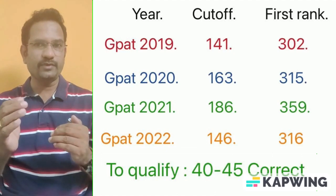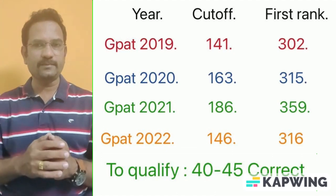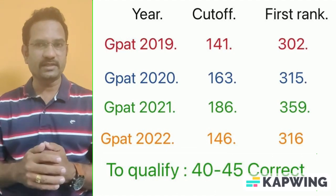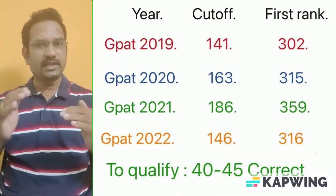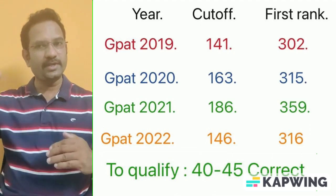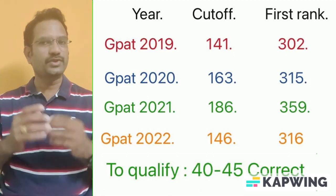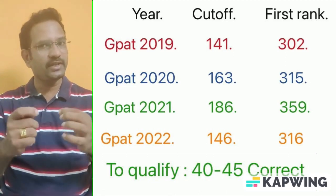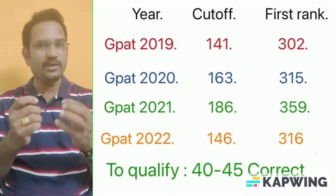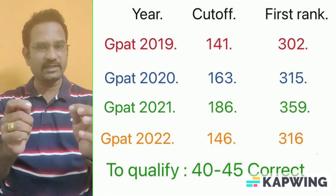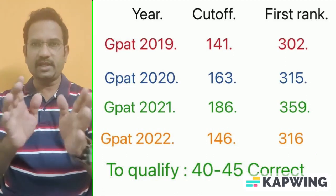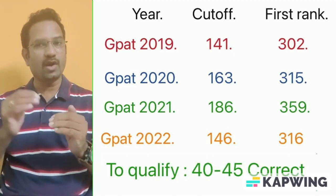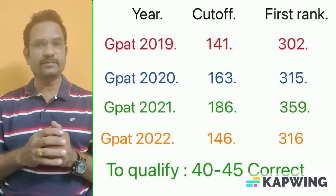Why is this happening? Can't we answer 40 to 45 questions correctly? The problem comes with negative marks. The question paper has 125 questions, so students tend to answer each and everything. Even if they don't know the correct answer, they put an option and then come back. This results in a lot of negatives.